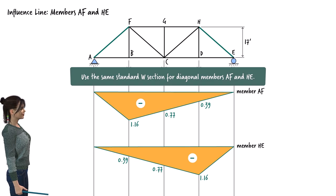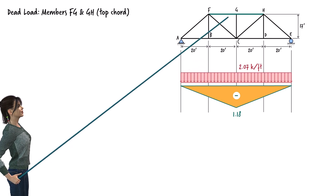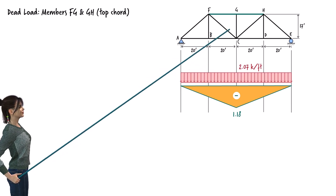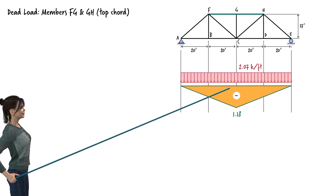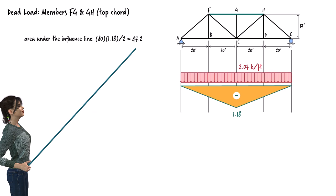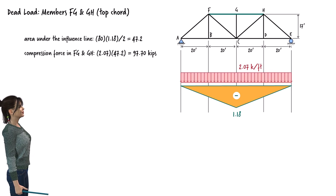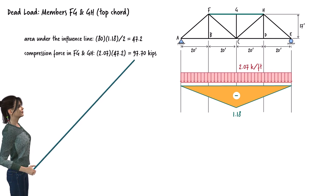Having the influence lines, we can easily determine the maximum axial force in each member due to the applied loads. Let's start with the dead load. For the members along the top chord of the truss, the axial force can be determined by multiplying the magnitude of the dead load by the area under the influence line. The area under the influence line is 47.2. Since the influence line is drawn below the x-axis, the top chord members are in compression. The axial compressive force in each top chord member due to the dead load is 97.7 kips.